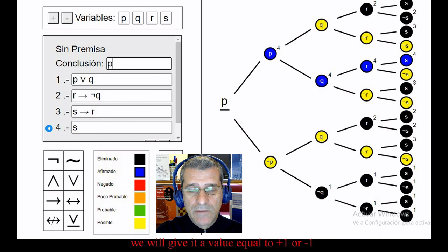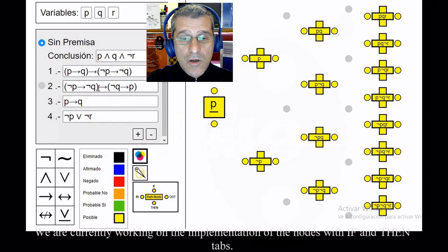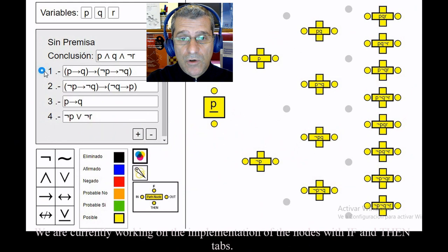We are currently working on the implementation of the nodes with IF and THEN tabs. In this way, we can represent the propositions traditionally called complex or secondary.